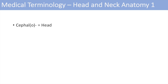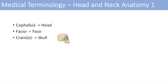To begin at head and neck anatomy, the first word is cephalo, which means head. The next one is fascio, which means face. Cranio means skull — you can think of a craniotomy, a kind of an incision into the skull.